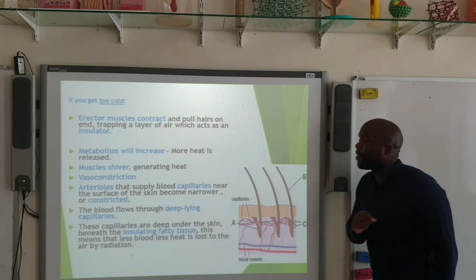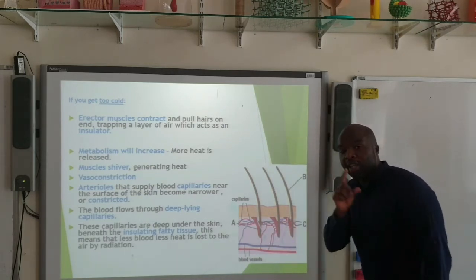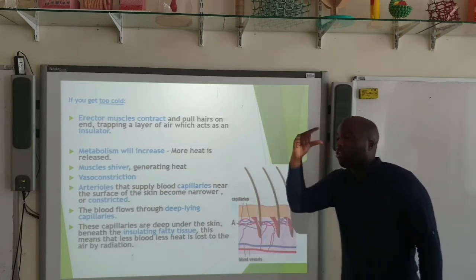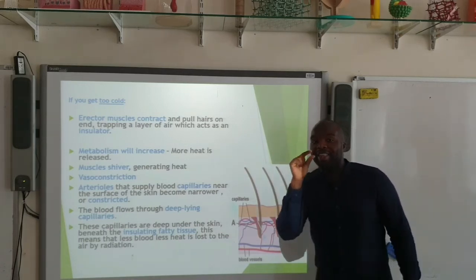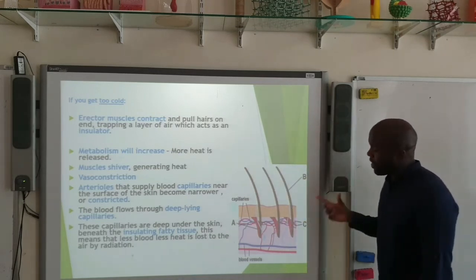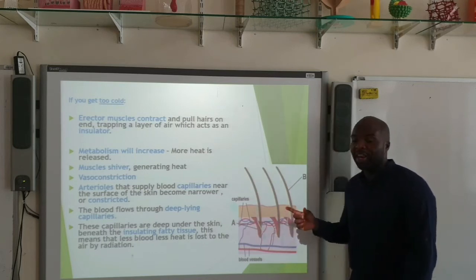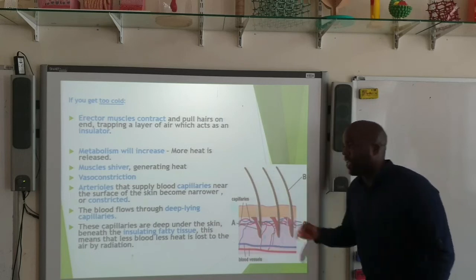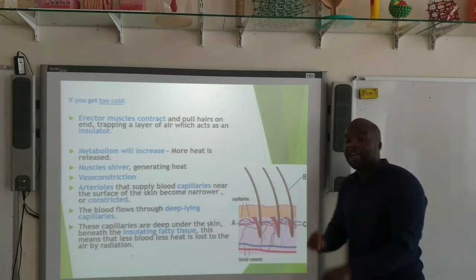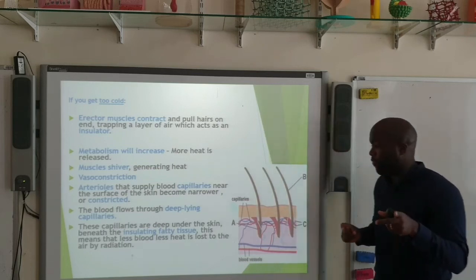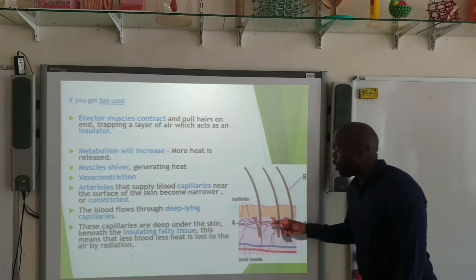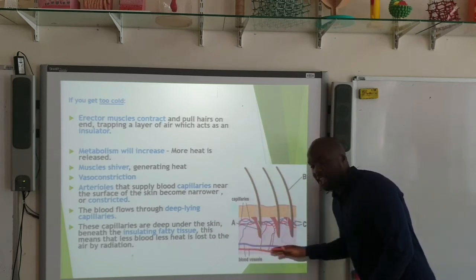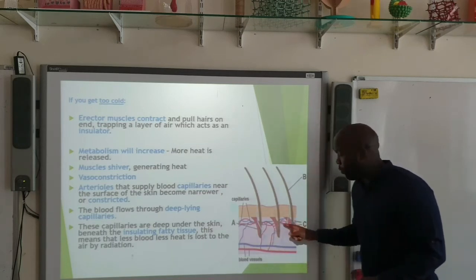We also have vasoconstriction. What happens with vasoconstriction is the arterioles that supply the blood capillaries near the surface of the skin will get narrower — they constrict. When they constrict, less blood goes to the capillaries near the surface of the skin, and the blood is redirected to capillaries lying deep underneath the skin. These capillaries are actually lying beneath the insulating fatty tissue. This means that less heat is lost to the environment via radiation, because the blood is now flowing beneath the fatty tissue where it is insulated.